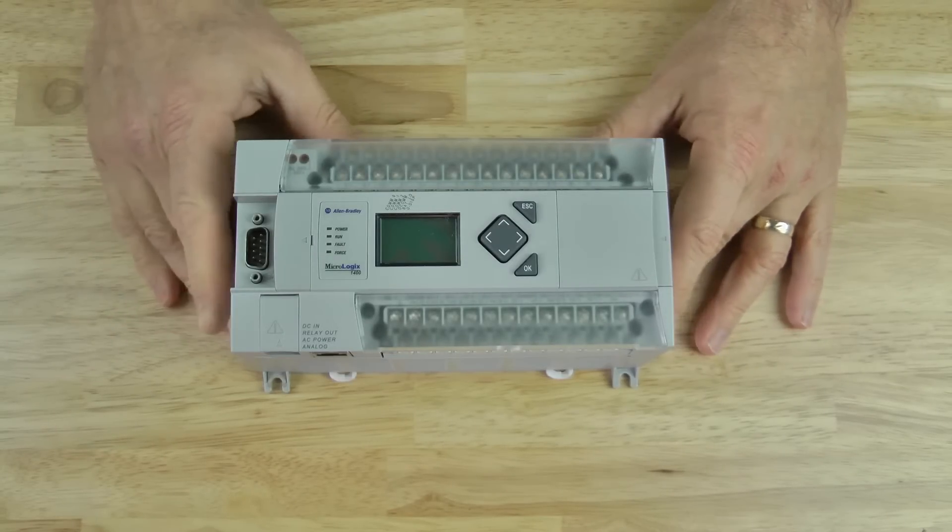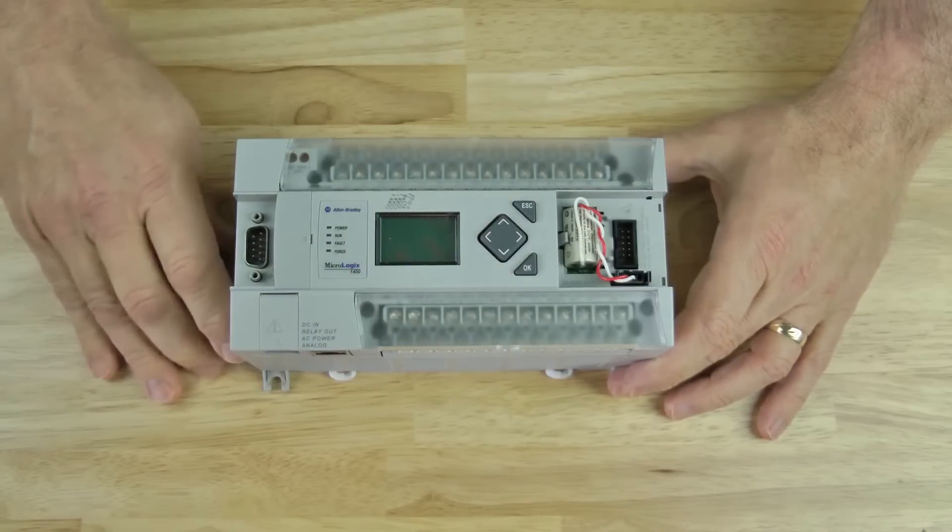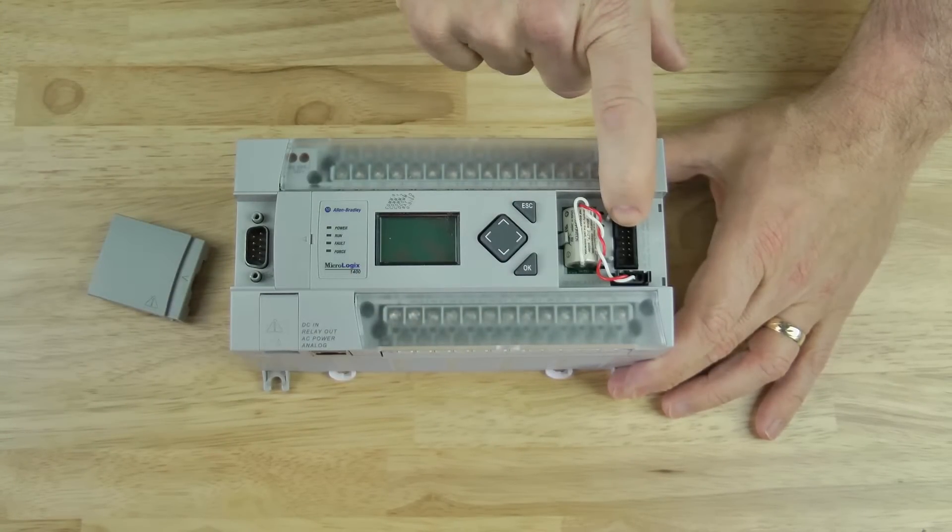Here we have a MicroLogix 1400, and on the right hand side we see this plastic cover which covers up the battery, but it also covers up the expansion I.O. port for the MicroLogix.